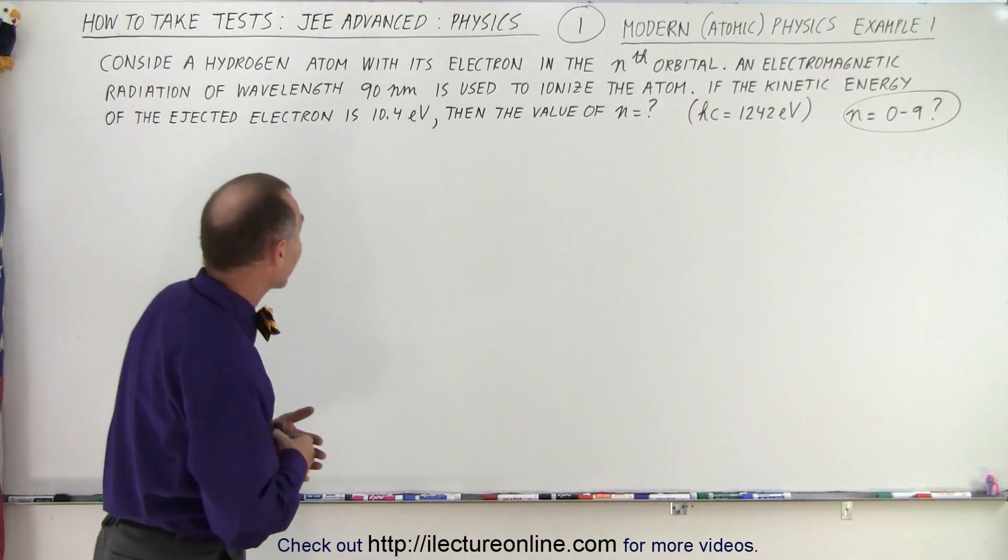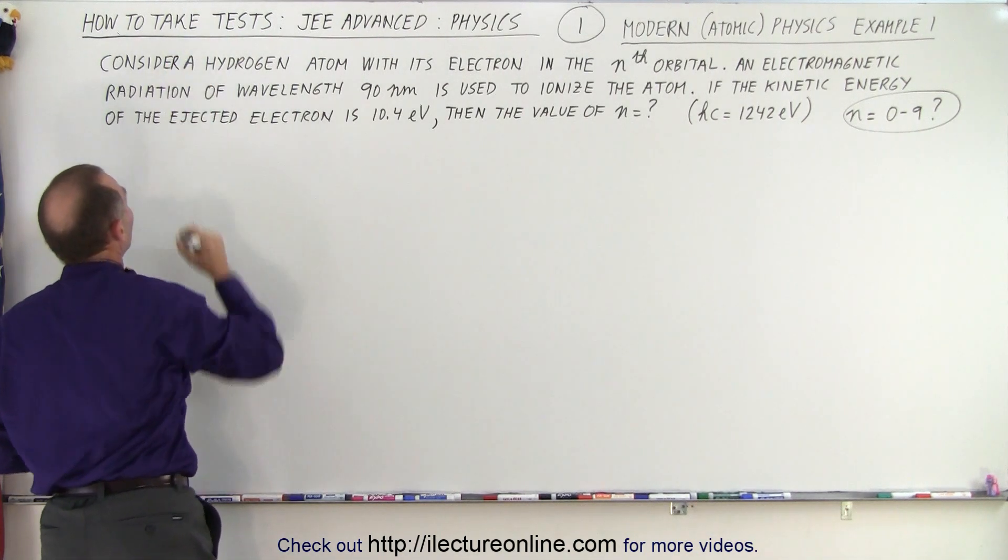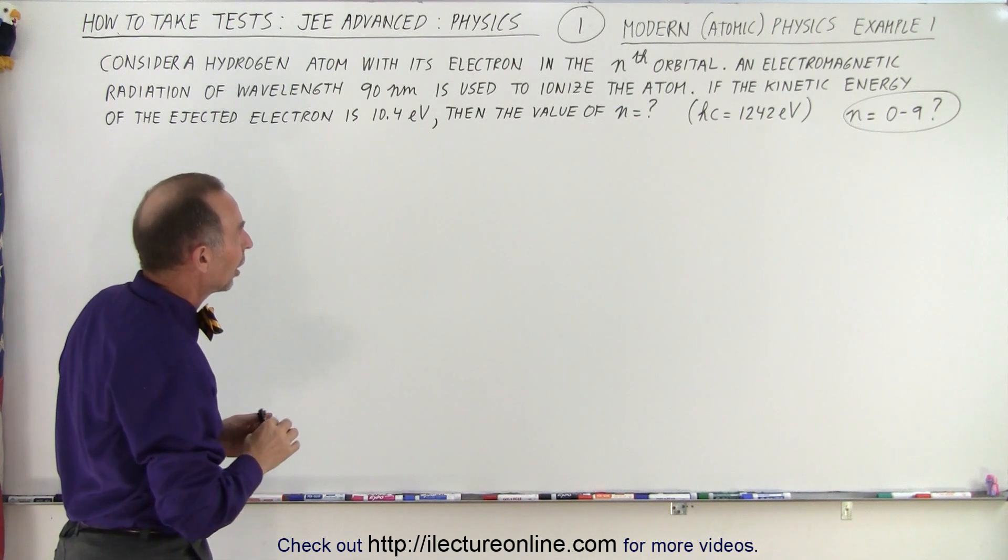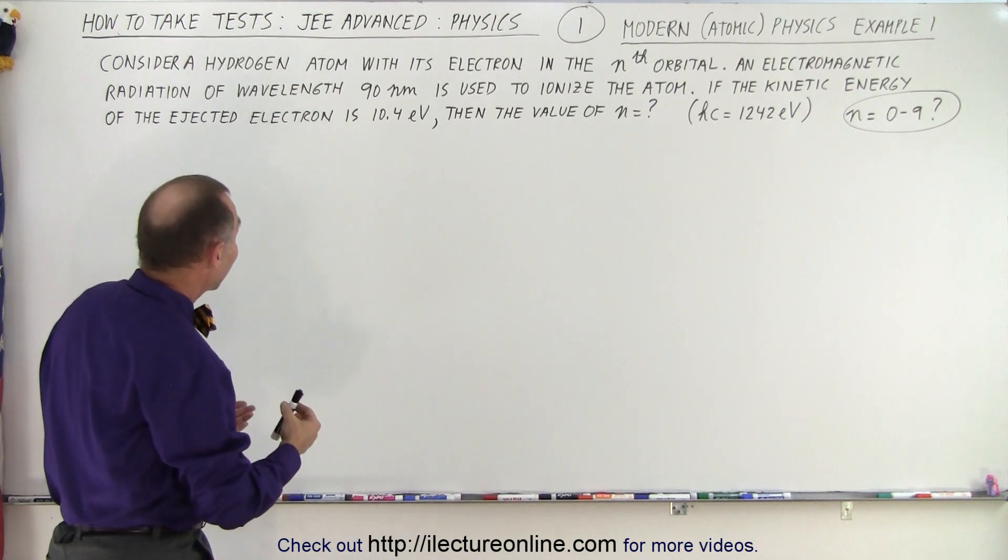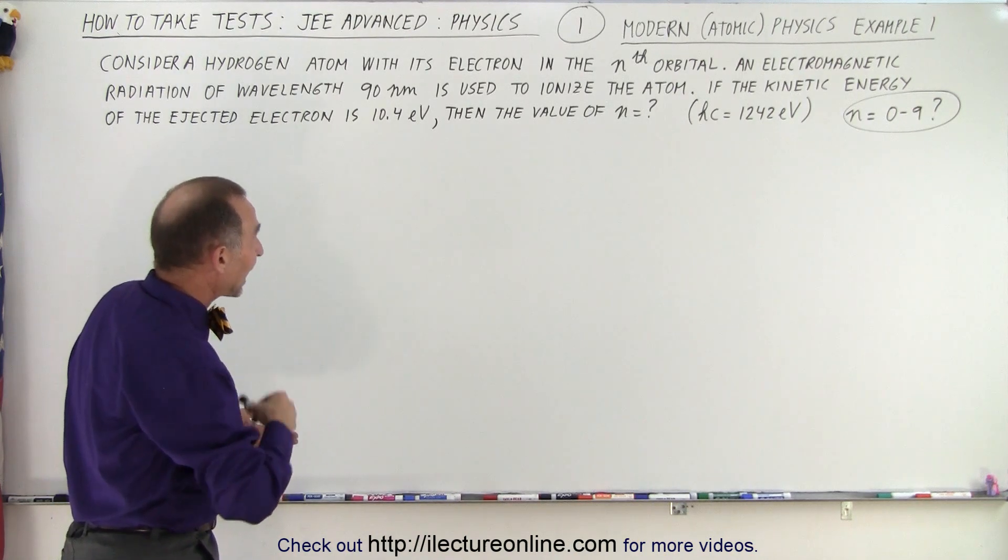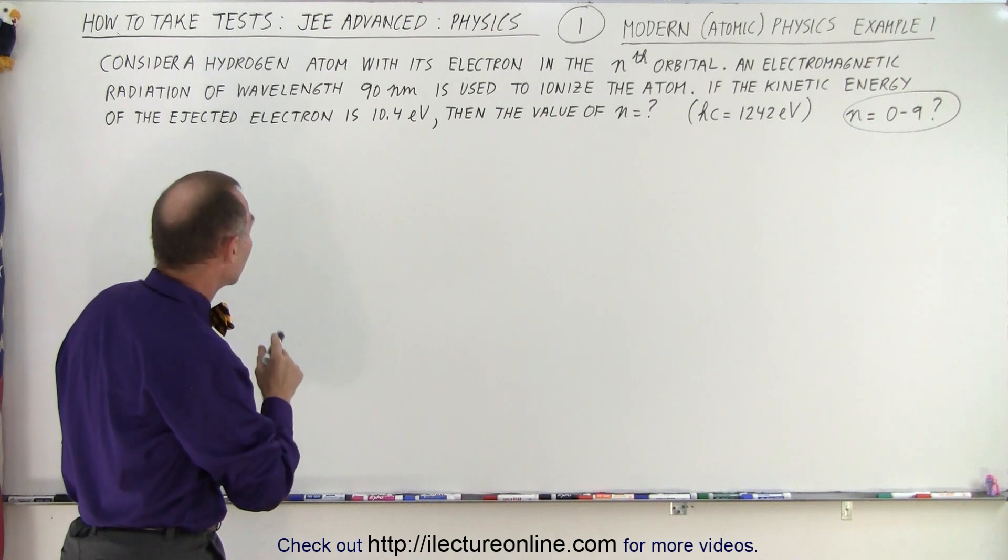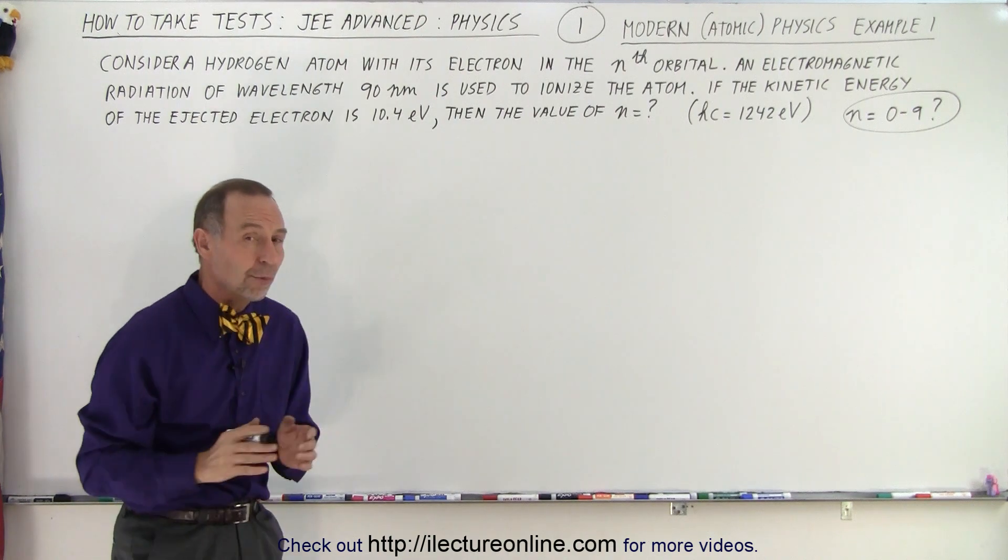So let's read the problem together. Consider a hydrogen atom with its electron in the n-orbital. An electromagnetic radiation, a photon, of wavelength 90 nanometers is used to ionize the atom. If the kinetic energy of the ejected electron is 10.4 electron volts, then the value of n is equal to question mark.